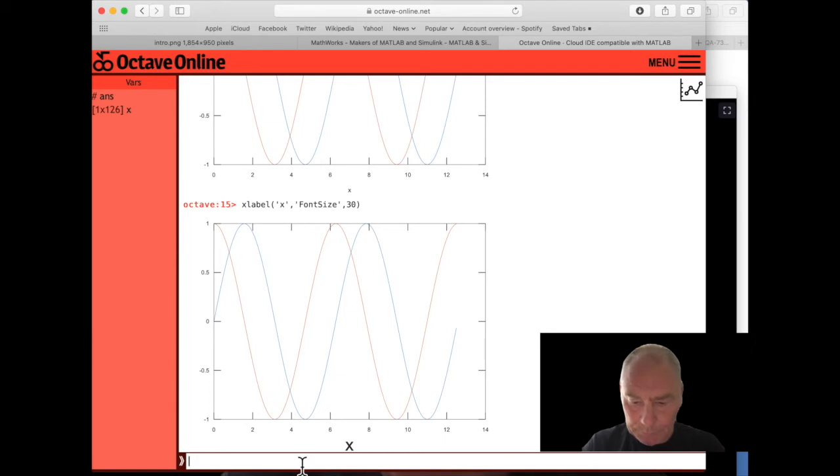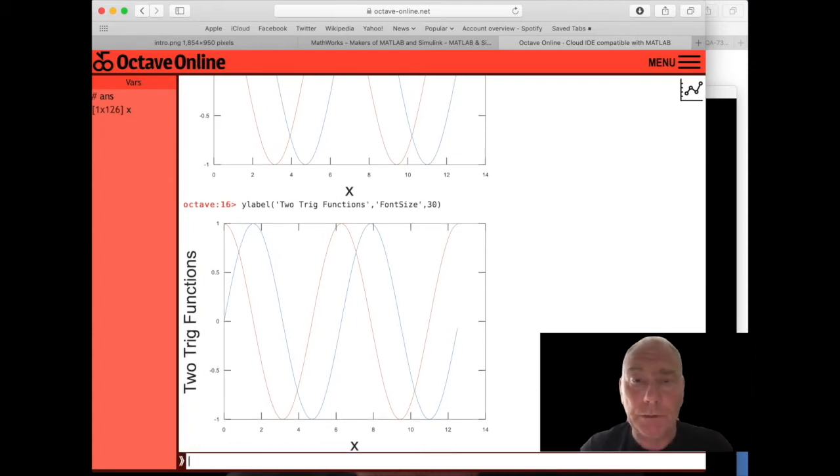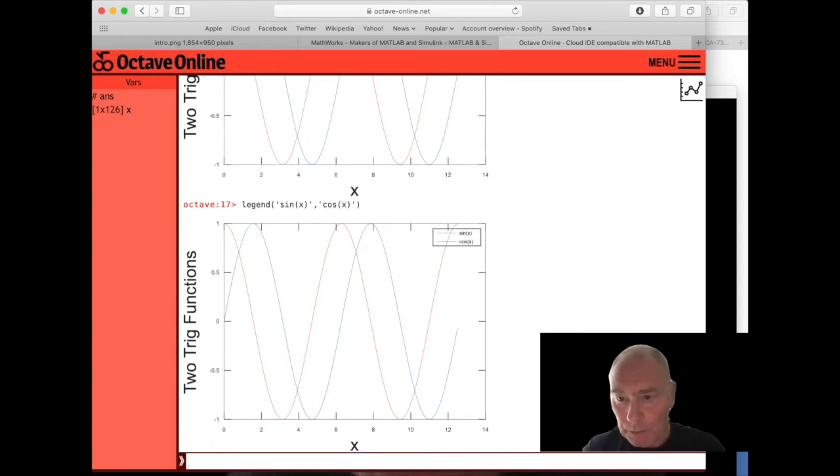We can do a y label as well. And again we would like that to be in a nice big readable font. Now that's looking like a high quality graph now, isn't it? The other thing we'd like to do is to add a legend. A legend tells the person looking at the graph which line is which. So we plotted sine first. So we'll type sine into our legend first. And we've plotted cos second. Now we've got a legend. It tells us that the blue line is sine x and the red line is cos x.